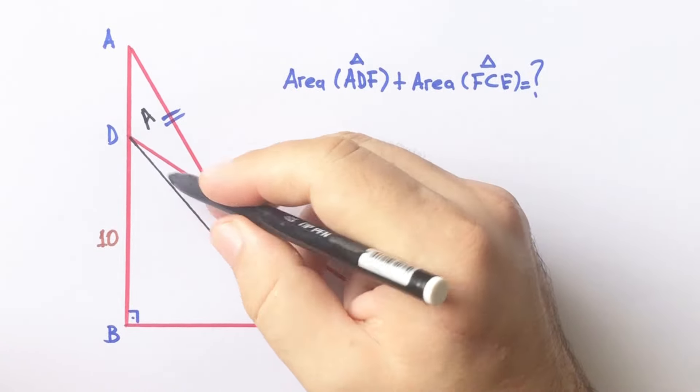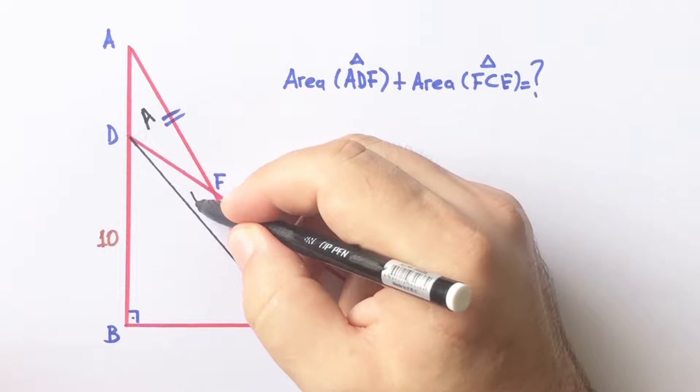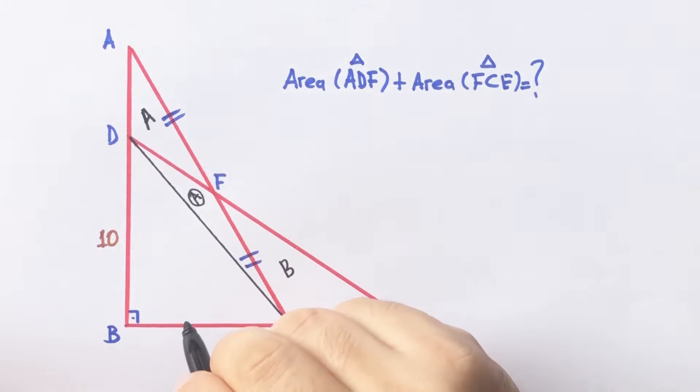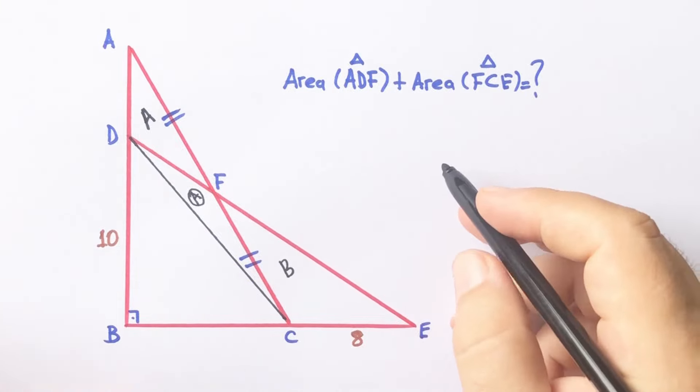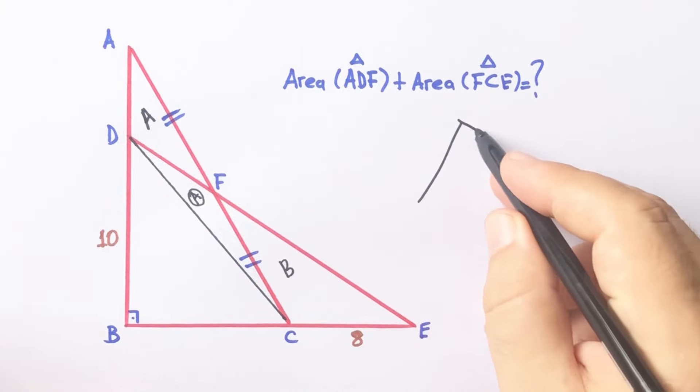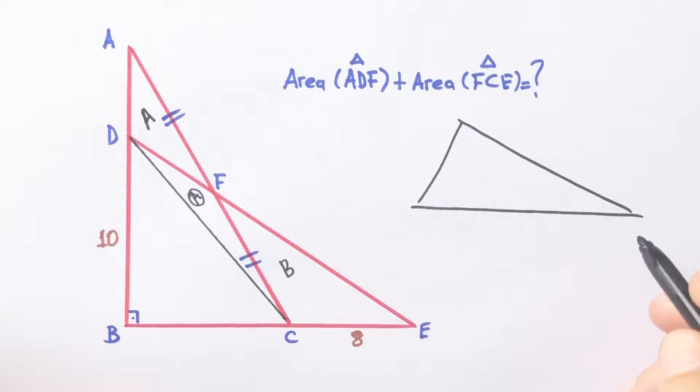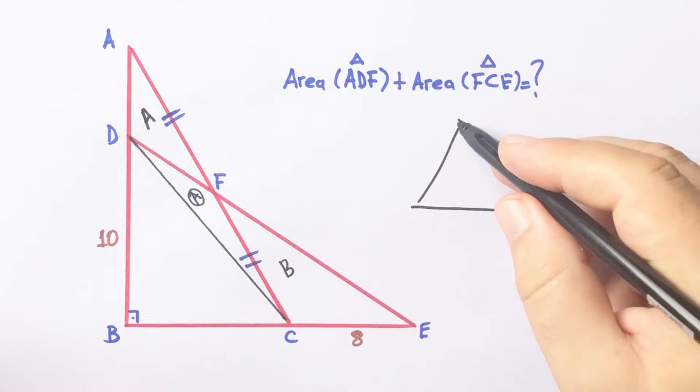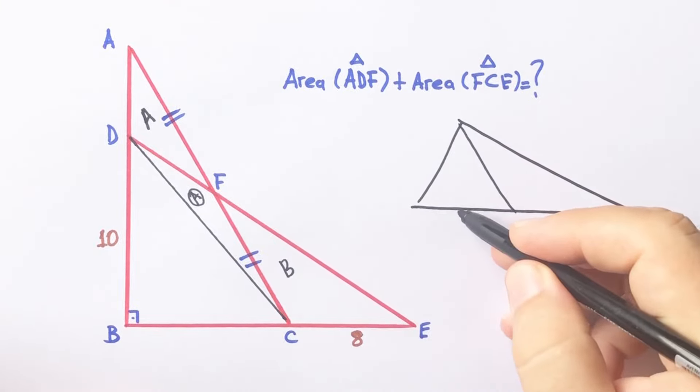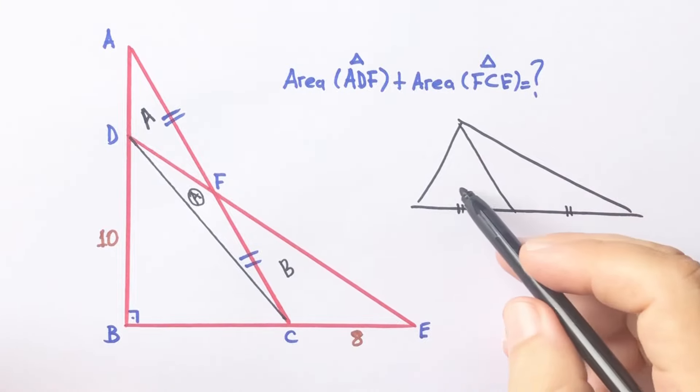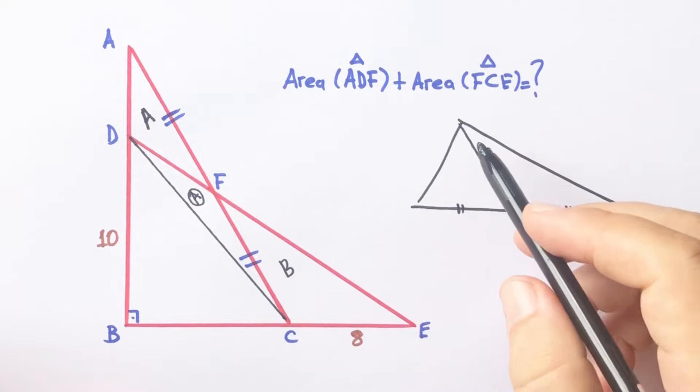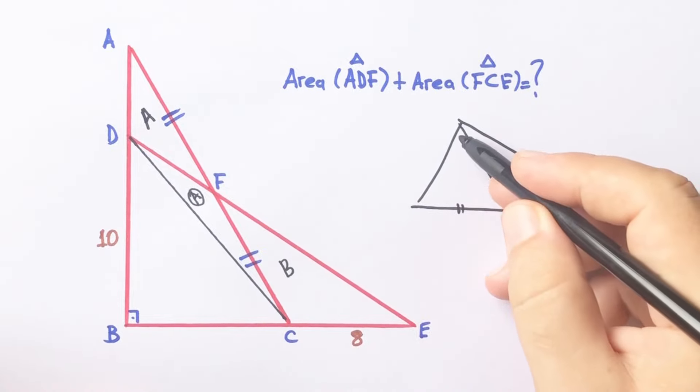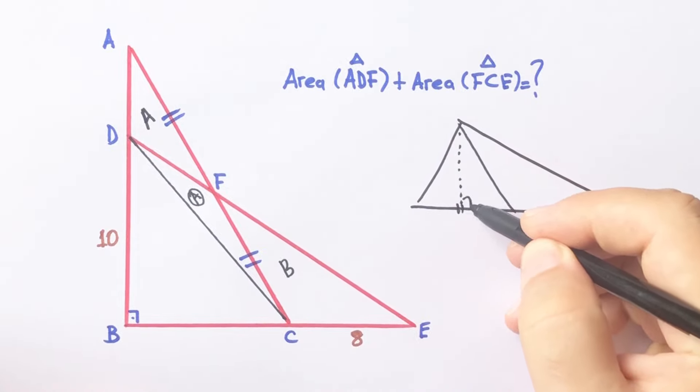The area of DFC triangle is also uppercase A. Why? Let's remind you, if we have a triangle which basis and heights are equal like this. Okay, here is the height.